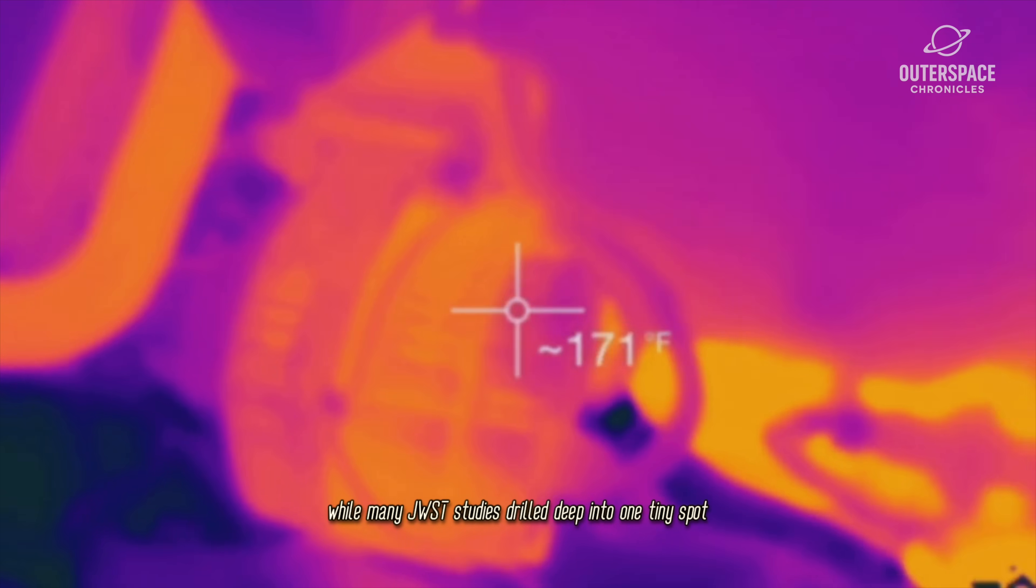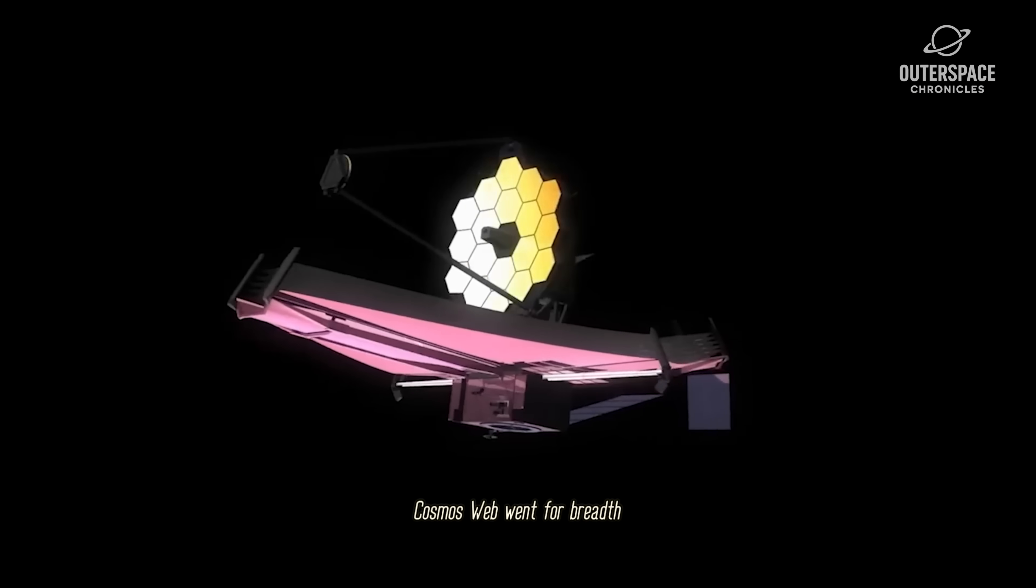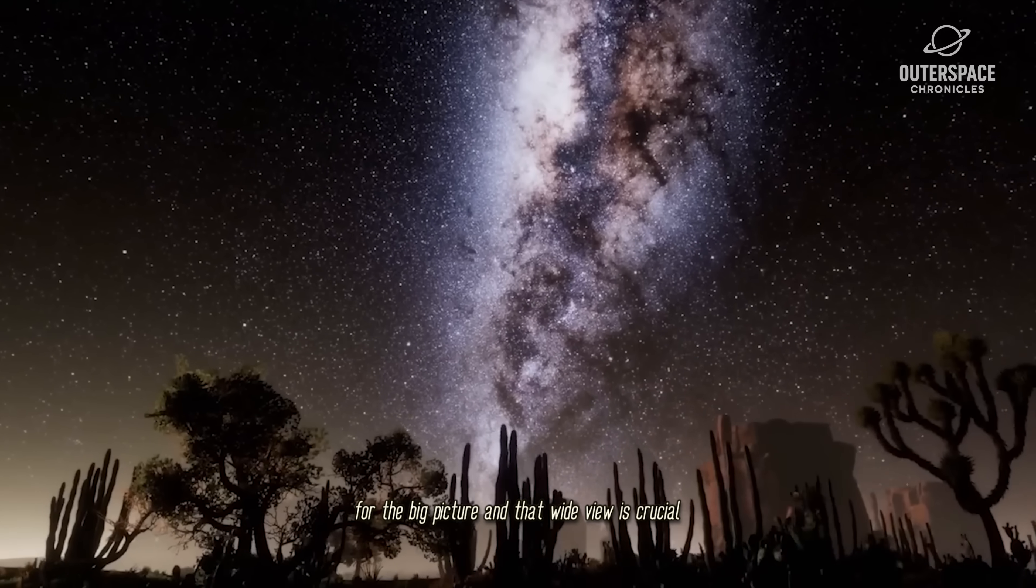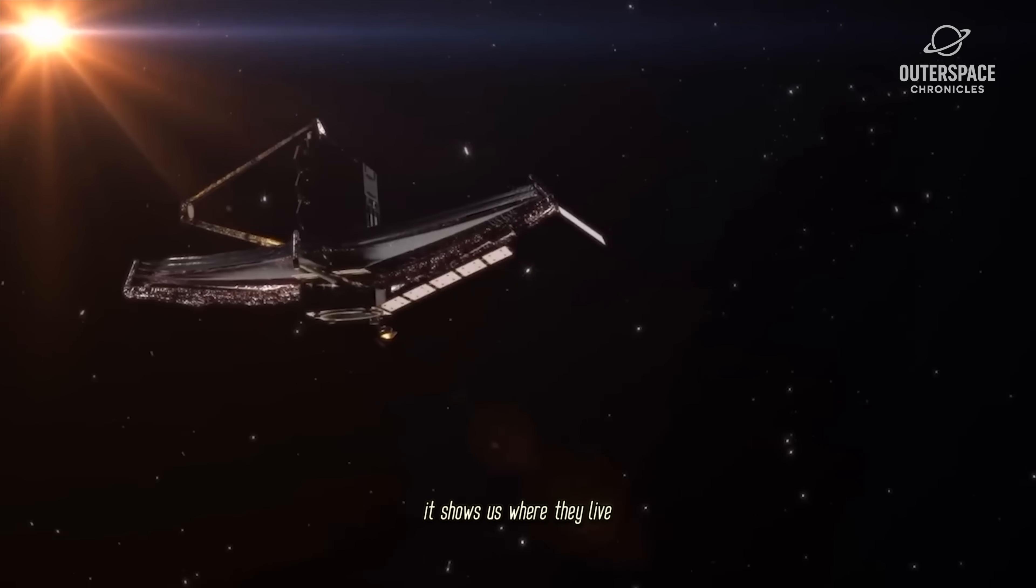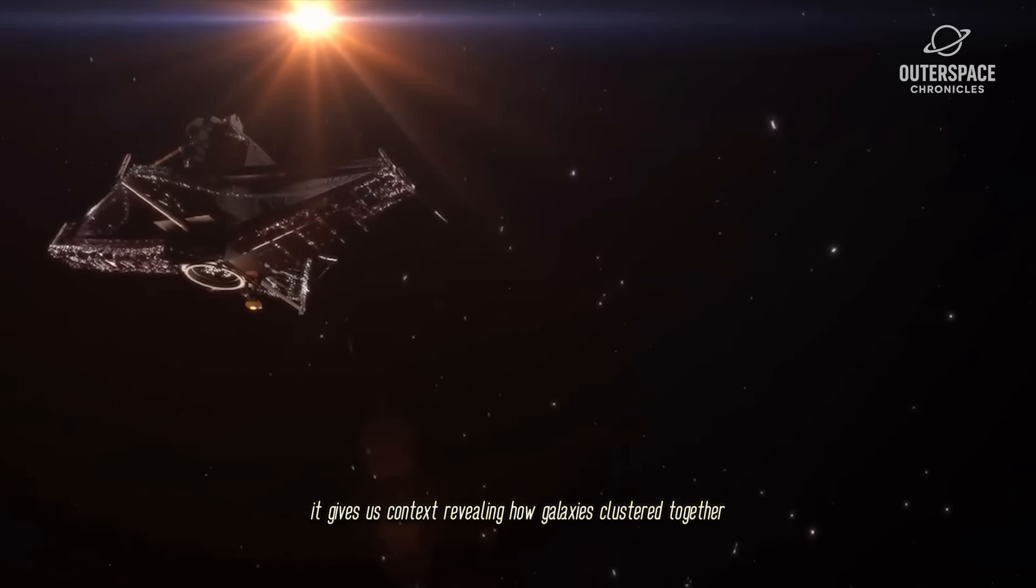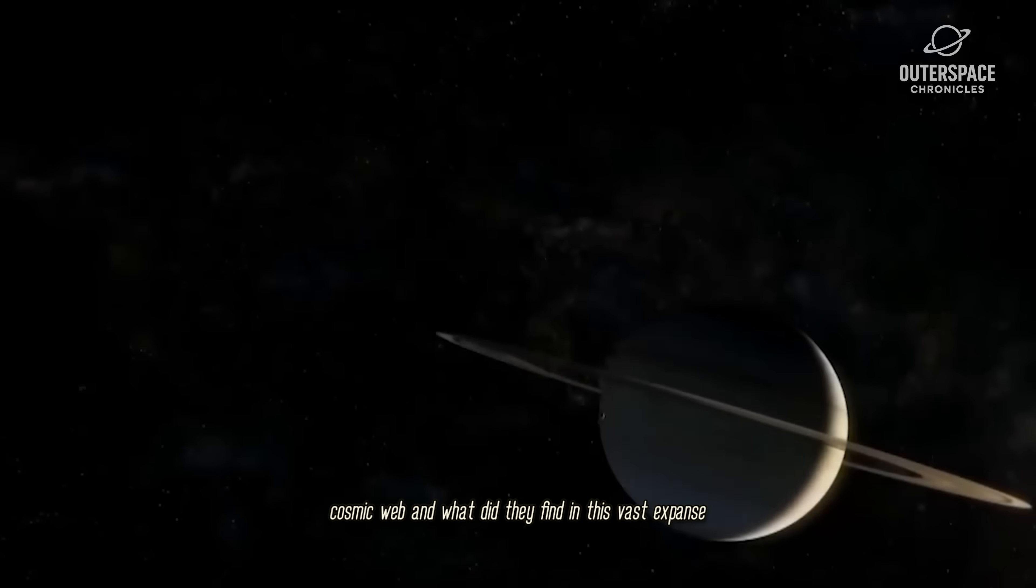While many JWST studies drill deep into one tiny spot, Cosmos Webb went for breadth, for the big picture. And that wide view is crucial. It doesn't just show us what galaxies look like, it shows us where they live. It gives us context, revealing how galaxies cluster together and evolve as part of a grand cosmic web.